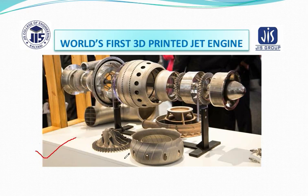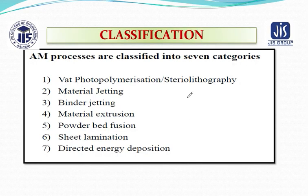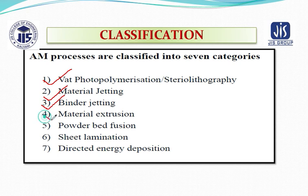Have a look at this interesting example — the world's first 3D printed jet engine, through which various 3D products of additive manufacturing have been obtained. The additive manufacturing process has been classified into seven categories: vat photopolymerization (commonly known as stereolithography), material jetting, binder jetting, material extrusion, powder bed fusion, sheet lamination, and directed energy deposition.